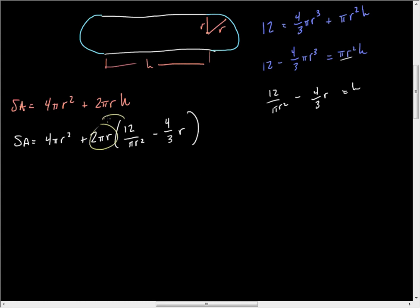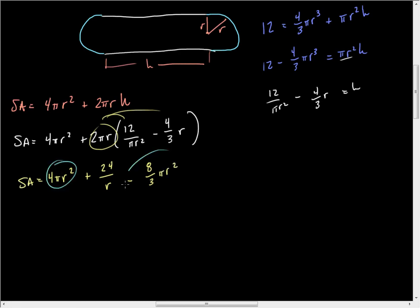Distributing that 2πr, surface area equals 4πr² plus — the π's and an r cancel — giving us 24/r minus (8/3)πr². We can combine those two r² terms: 12/3 minus 8/3 gives 4/3, so surface area equals (4/3)πr² + 24/r.